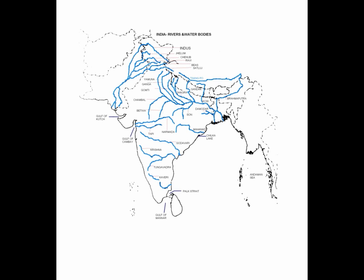Moving towards the northeastern side, river number 8 is Brahmaputra. Brahmaputra comes from outside India — it starts in China. The part outside the boundaries of India is known as Tsangpo, and the part inside the boundaries of India is known as Brahmaputra. Whenever asked to mark Brahmaputra, remember it should be within the boundaries of India.